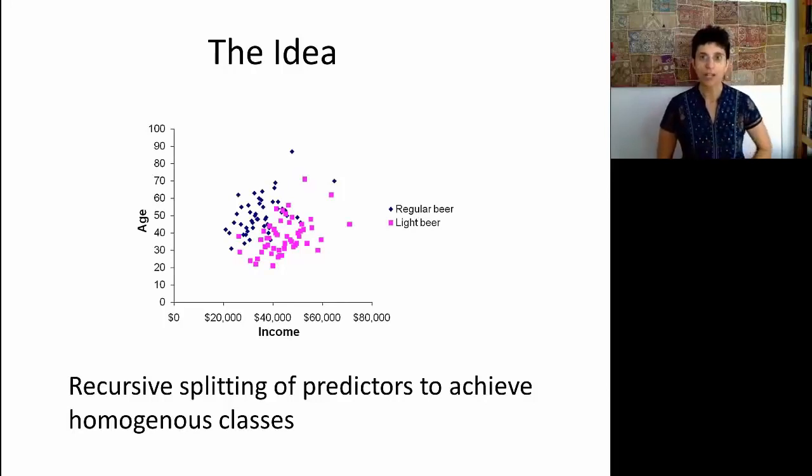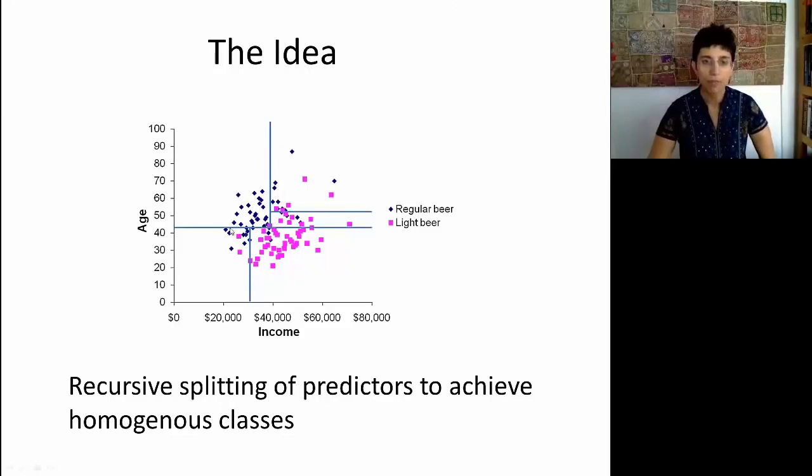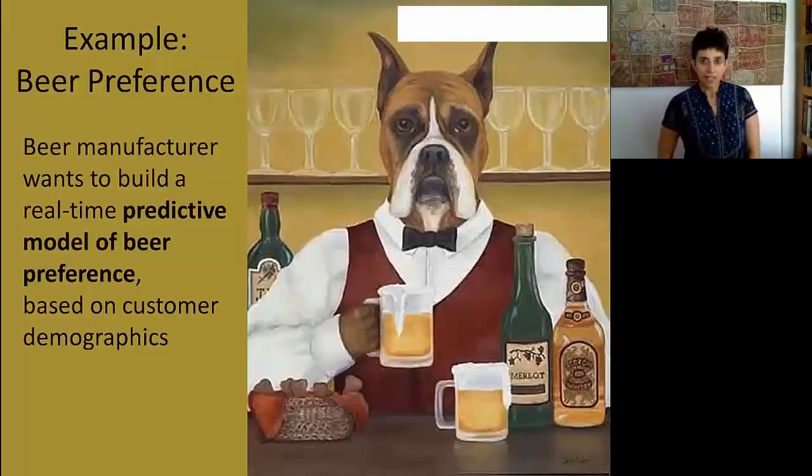On a more serious note, let's look at a scatter plot of two predictors, and we're using color to denote an outcome of interest. Here we're looking at customers, and their output of interest is whether they prefer regular beer or light beer. We're using two predictors, age and income, and the question is how does a tree help us split the light and regular beer drinkers? A tree does this by splitting, in this case, the 2D area into rectangles. It looks for splits on the predictors that create homogeneous groups in terms of having a majority of either regular beer drinkers or light beer drinkers.